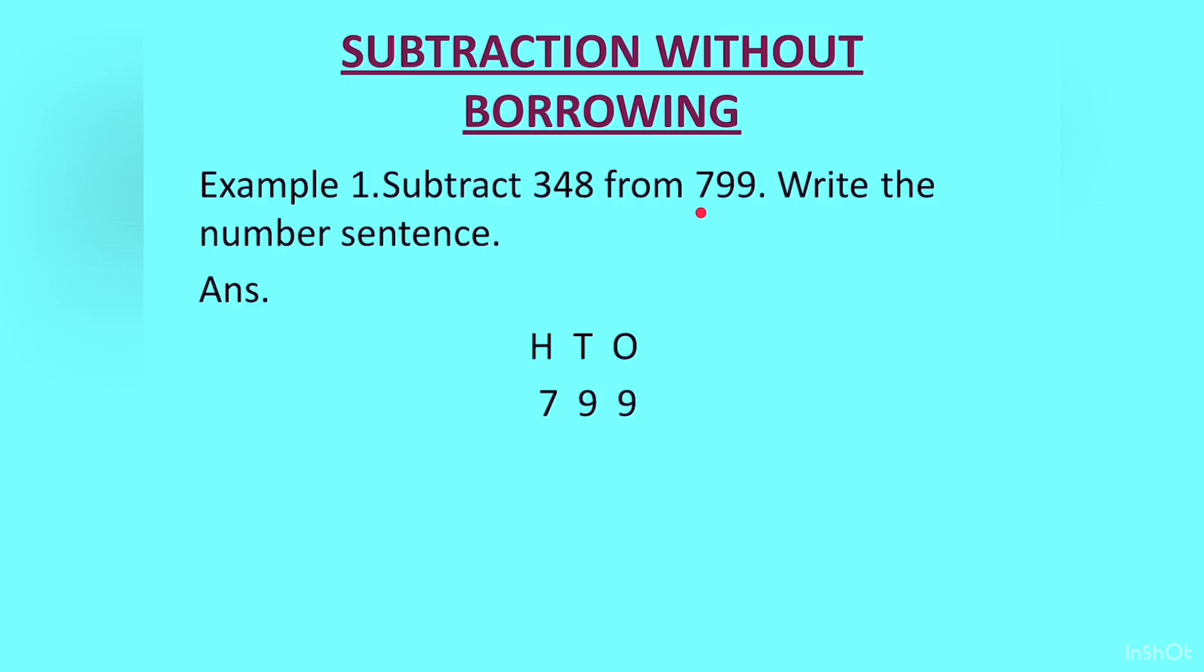And below it we will write 348. Look at the ones column. We have 9 minus 8 which gives us 1. Then the tens column, we have 9 minus 4 which gives us 5. Then the hundreds column, we have 7 minus 3 which gives us 4. So we get the answer as 451. Now we have to write the number sentence. So we will write 799 minus 348 is equal to 451.